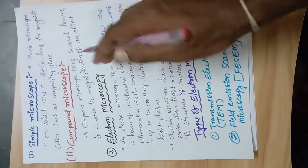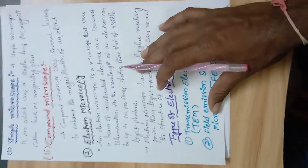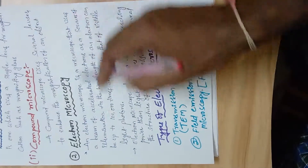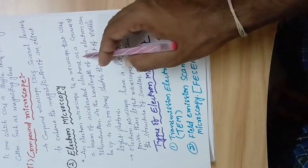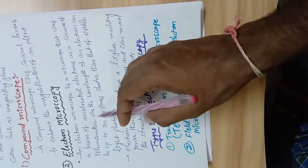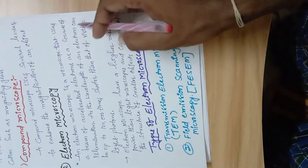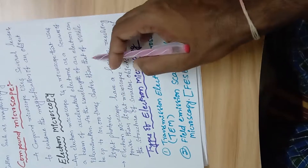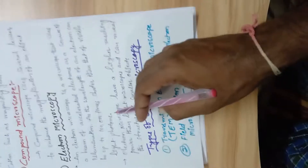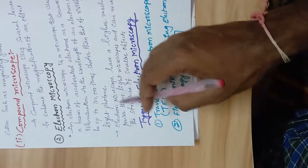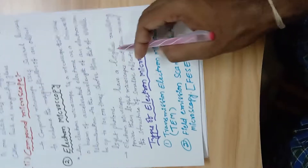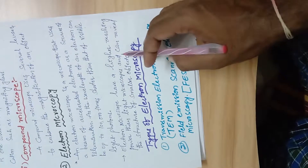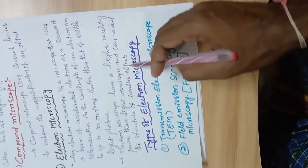Next, electron microscopy. An electron microscope uses a beam of accelerated electrons as a source of illumination. Since the wavelength of an electron can be up to 100,000 times shorter than that of visible light photons, electron microscopy has a higher resolution and higher resolving power than light microscopy, and can resolve the structure of much smaller objects.